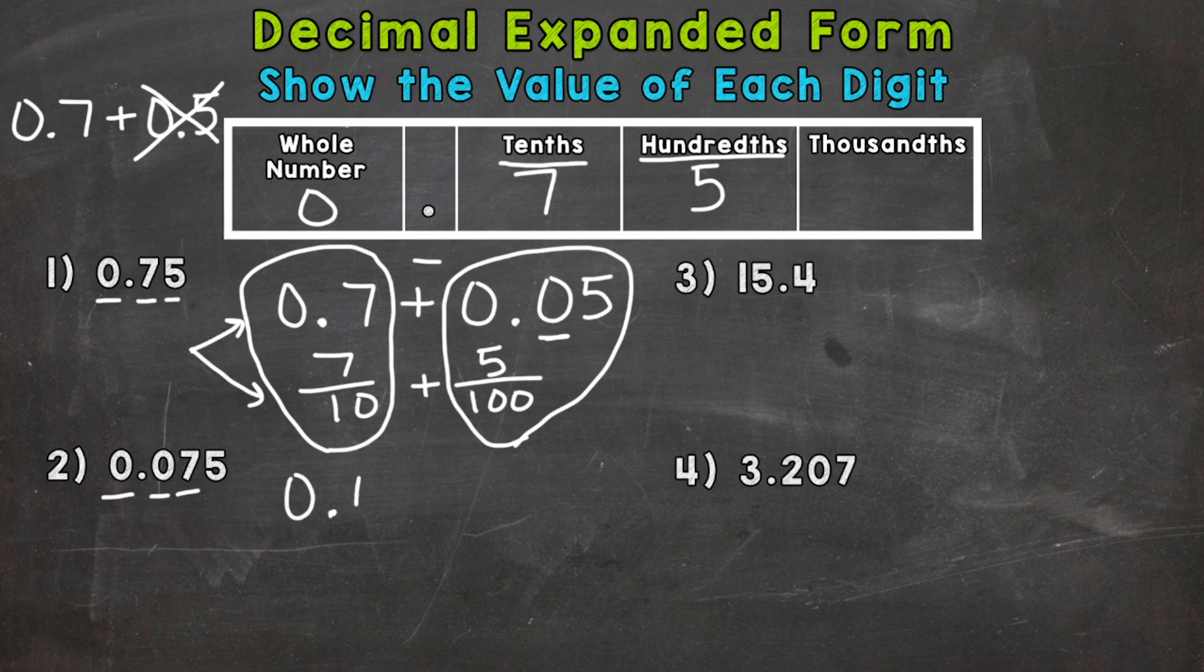So, our decimal is going to be seven hundredths. Notice we had to use that zero to push the seven to the hundredths place, plus five thousandths. So we need two zeros to push the five over to the thousandths place, a zero in the tenths and a zero in the hundredths.